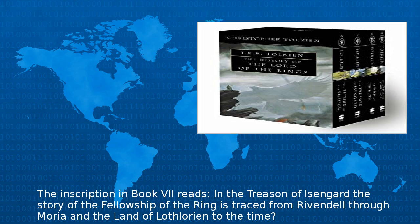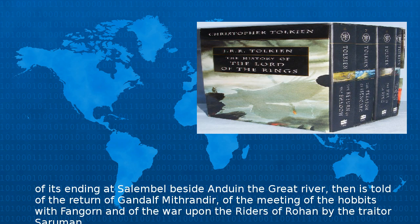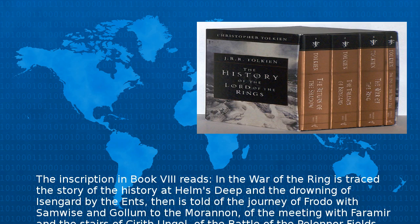The inscription in Book VII reads: In The Treason of Isengard the story of the Fellowship of the Ring is traced from Rivendell through Moria and the land of Lóthlorien to the time of its ending at Amon Hen beside Anduin the Great River; then is told of the return of Gandalf Mithrandir, of the meeting of the Hobbits with Fangorn, and of the war upon the Riders of Rohan by the traitor Saruman.